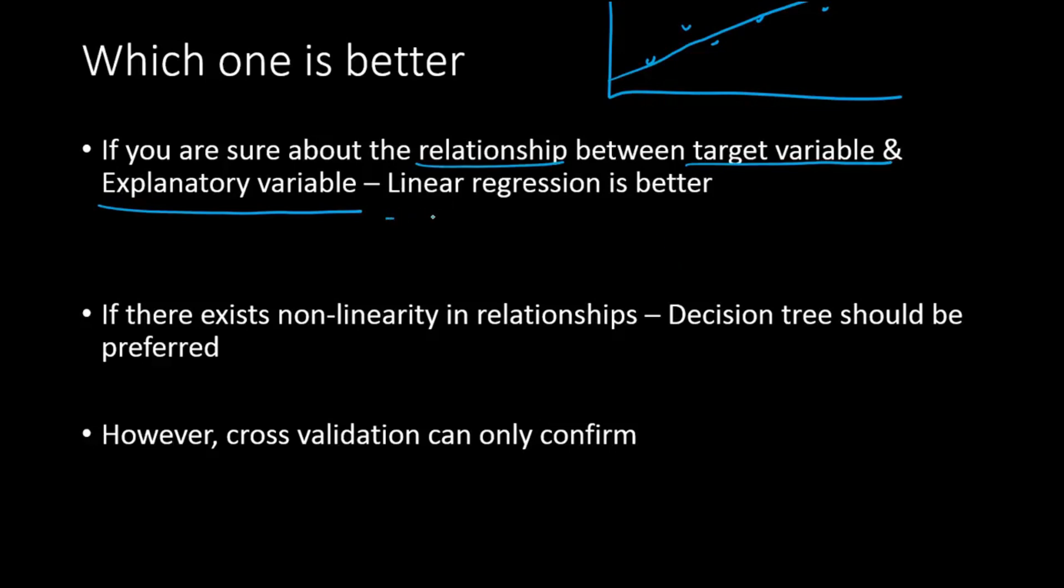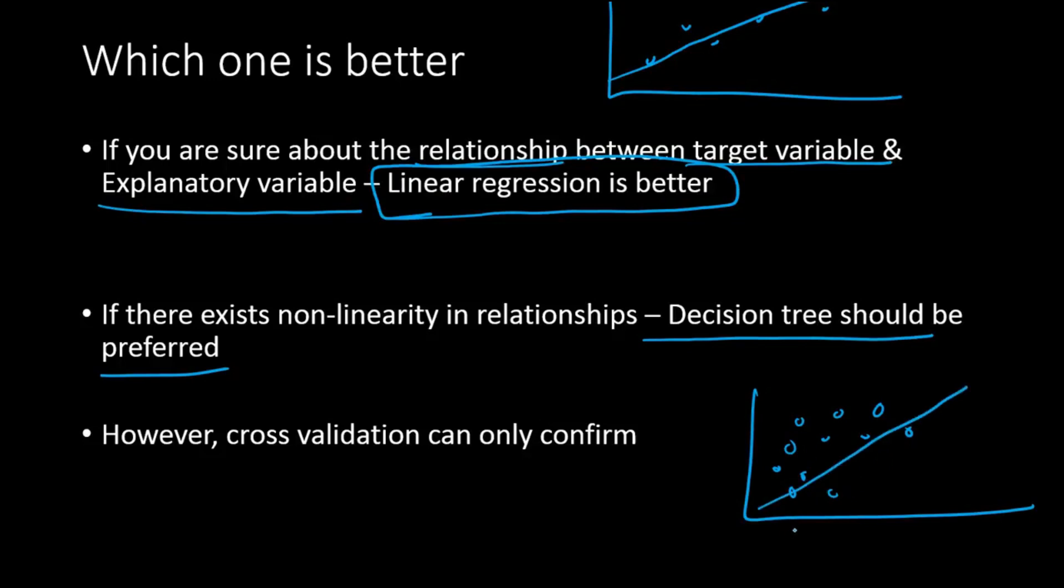In that particular scenario you should go for linear regression. But many times the relationship between the target variable and the explanatory variables are not very clear. Sometimes there is a very complex relationship that exists between the data that you cannot simply visualize and understand that it is linear in nature. In those scenarios it is always good to go with decision tree. You could have situations where the data is something like this. So in such a scenario, if you fit a linear regression line it is going to do a bad job. That is highly non-linear in nature.